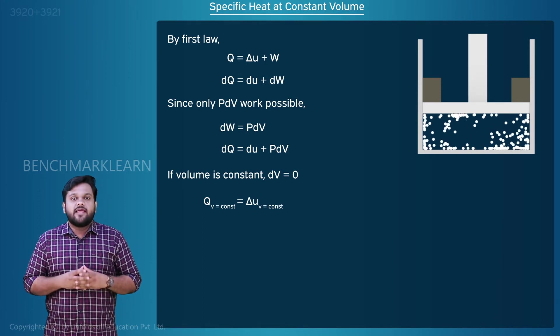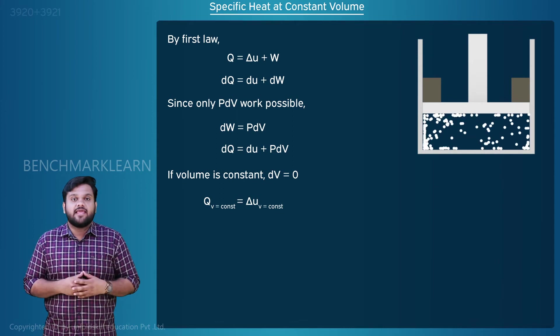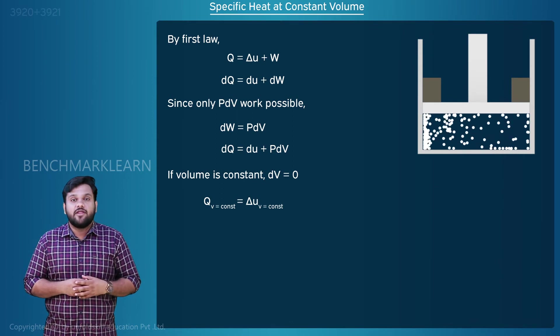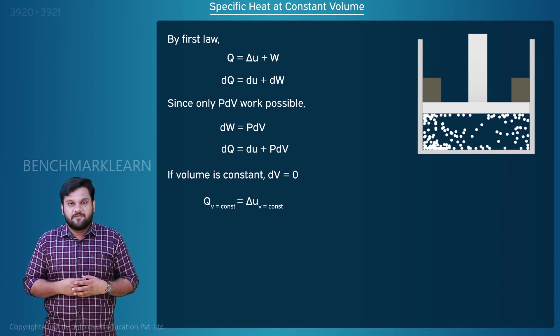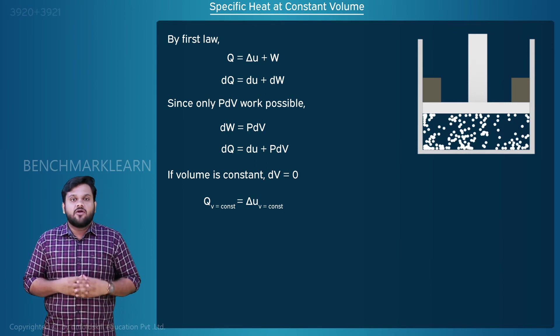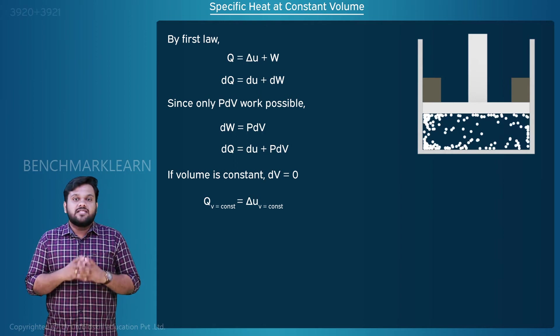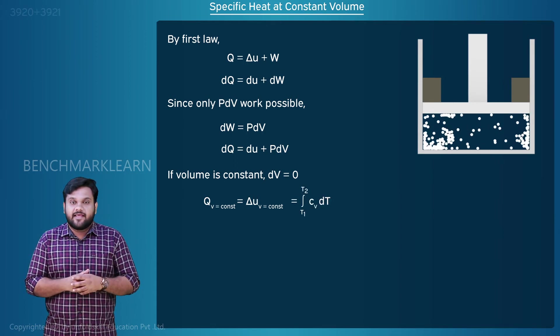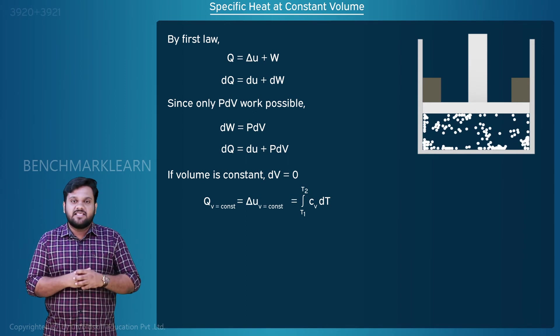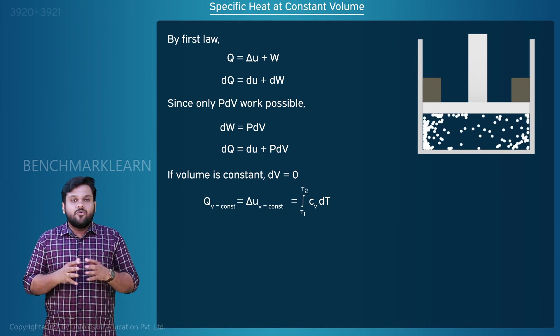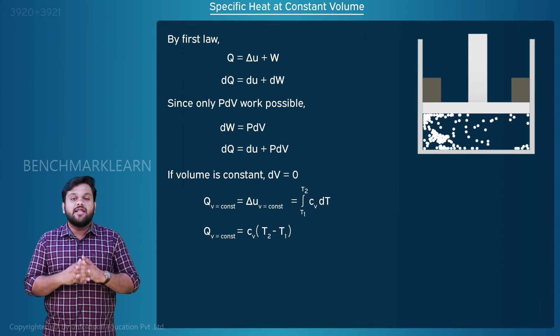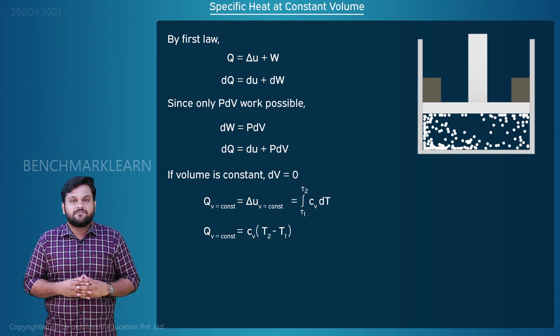Substituting for internal energy change, we finally get an expression for the heat supplied during constant volume process in terms of Cv. Q at V equal to constant is equal to delta U at V equal to constant which is equal to integral T1 to T2 Cv dt, which equals Cv into T2 minus T1.